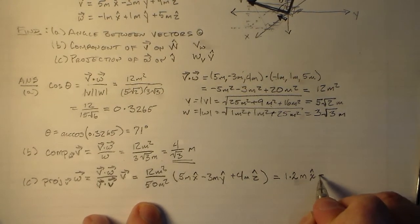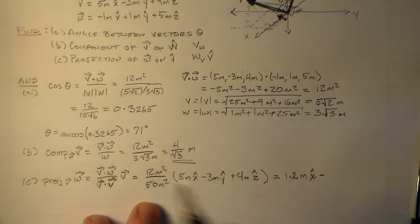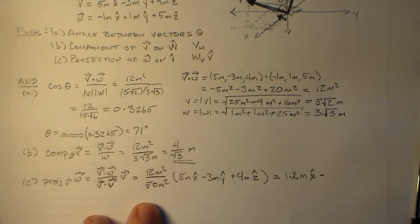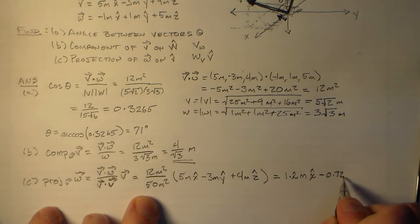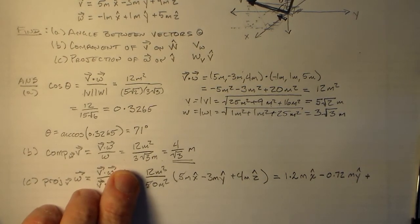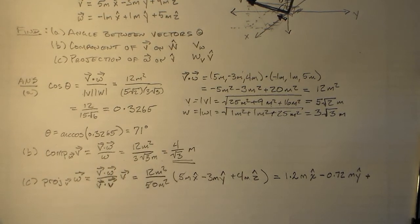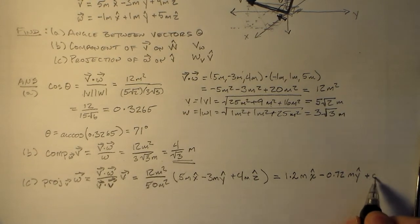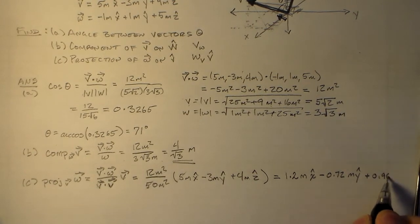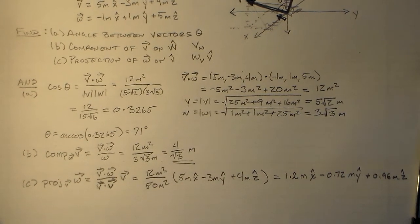So that's 0.72 meters in the y direction. And then we have 4 times 12 is 48, right? So 48 times 2 is 0.96 meters in the z direction, okay? So I think that's going to work out reasonably well for us all.